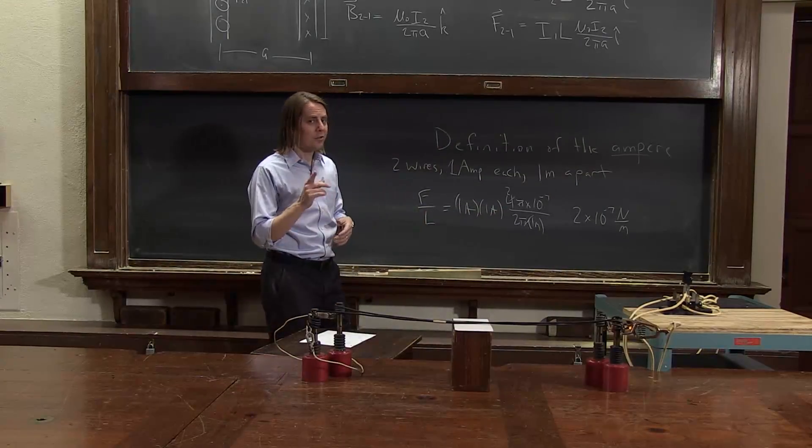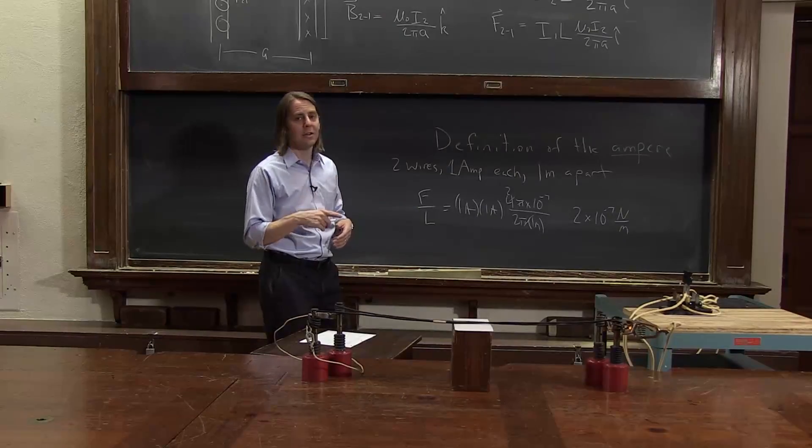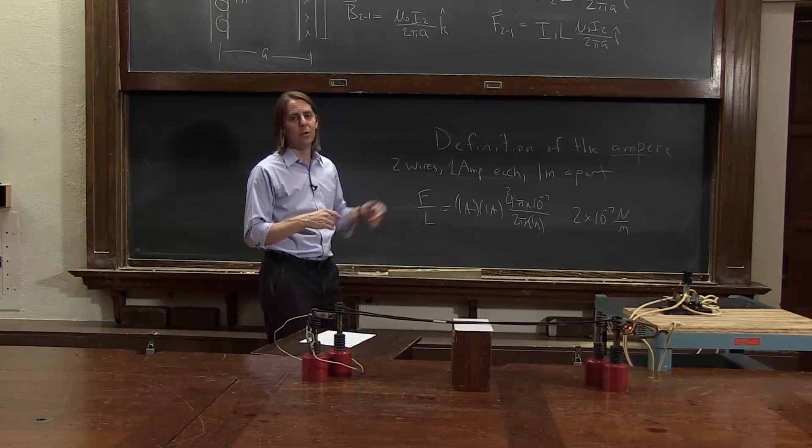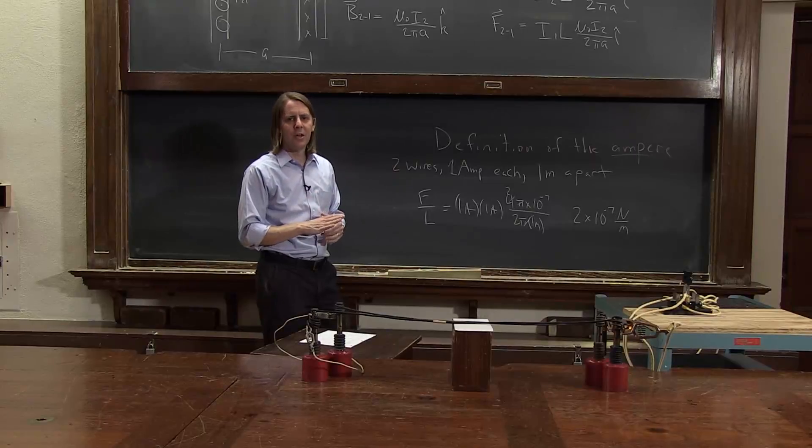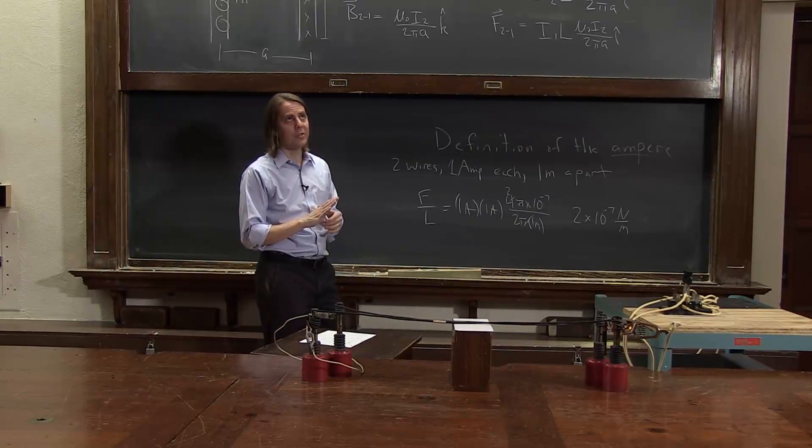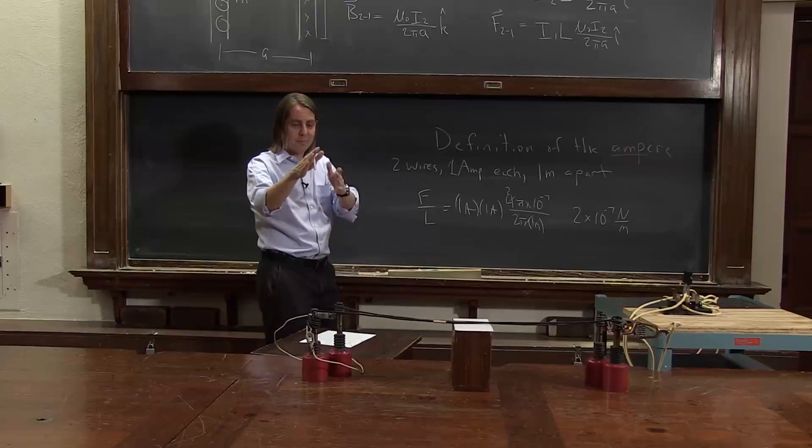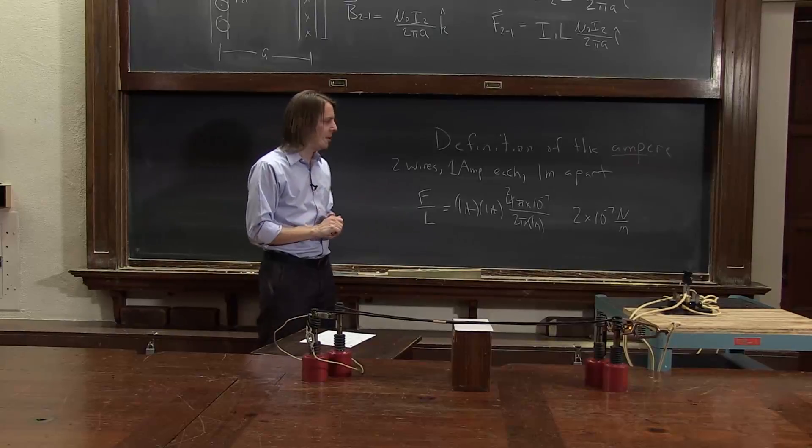which also means an amp is a coulomb per second. This is also how you define the coulomb. It's defined in terms of measuring this force. So in the very first lecture, when I told you about 1.6 times 10 to the minus 19th, that's based on this experiment. This is how they standardize the unit.